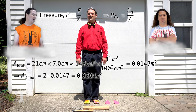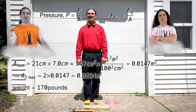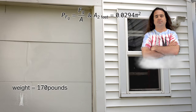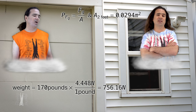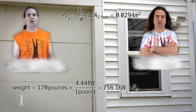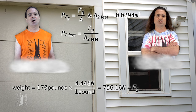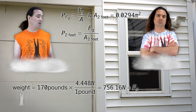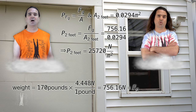And now we need your weight in newtons. Billy, how much do you weigh? 170 pounds. To convert to newtons, we multiply 170 pounds by 4.448 newtons over 1 pound, which gives us 756.16 newtons as your weight — the force of gravity acting on your body, pushing down on the ground with 756.16 newtons, as long as Billy is standing still. So the pressure caused by your feet pressing against the ground equals the force of gravity divided by the contact area, or 756.16 over 0.0294, or 25,720 newtons per square meter.